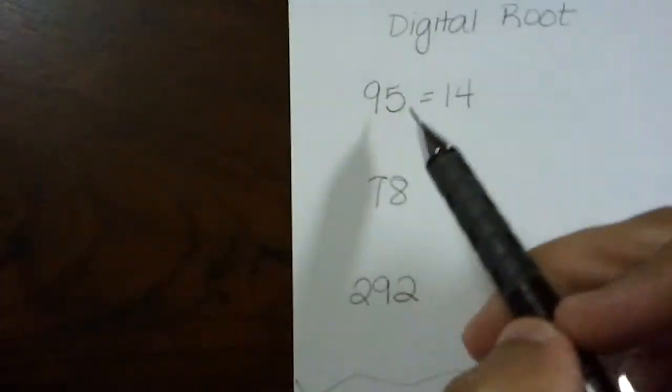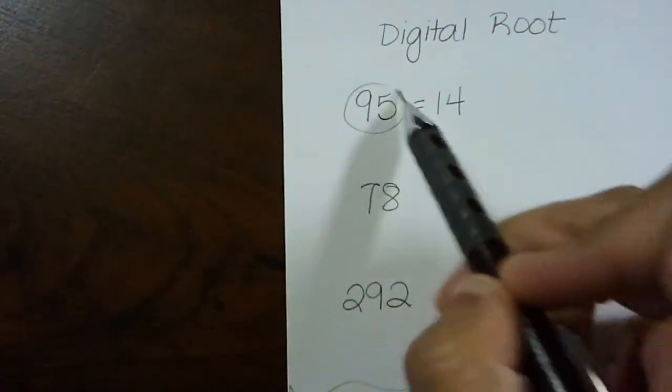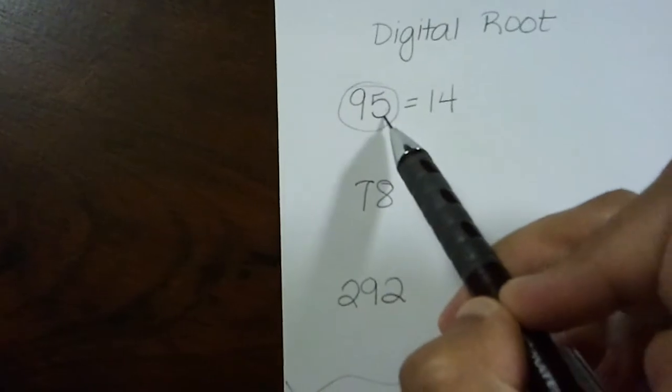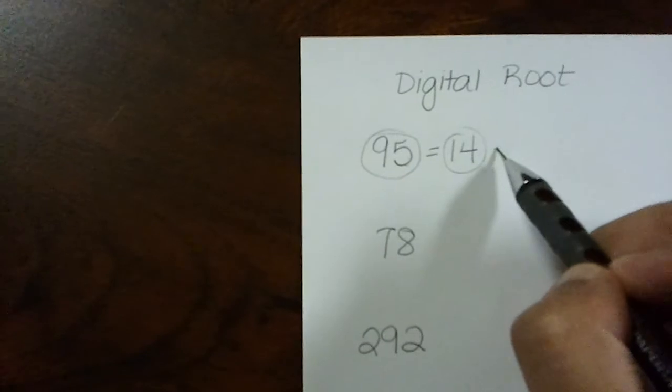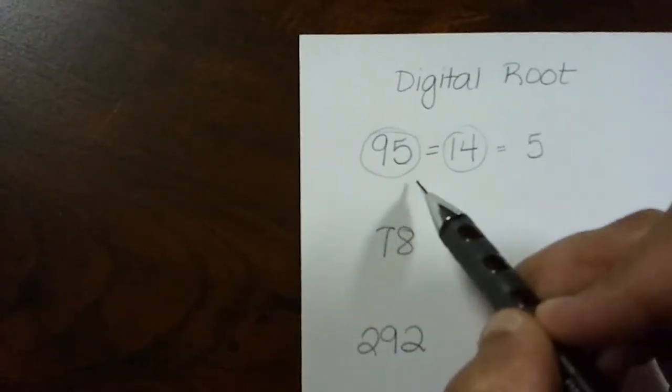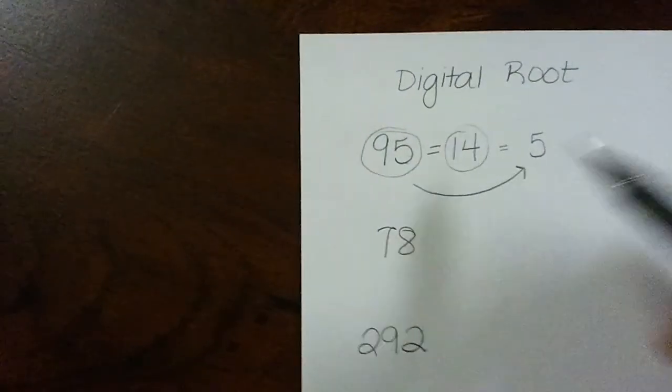First of all, let's review digital root. It is the sum of the digits. So if you have a number like 95, you would add 9 plus 5 and you get 14. You need to keep going until you get one digit. So the digital root of 95 is 5.